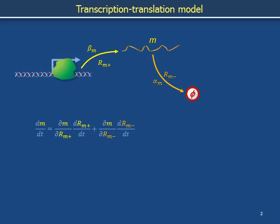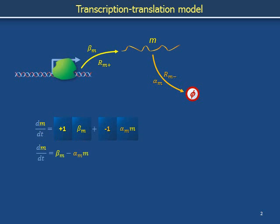The partial change in messenger RNA level owing directly to a transcription event is a gain of one. If the RNA polymerase, gene, and other reactants contributing to the chemical reaction we call transcription are present in constant amounts, the law of mass action prescribes a constant reaction rate, here called beta_m. The partial change in messenger RNA level owing directly to a messenger RNA degradation event is a loss of one. At this level of detail, the basic reactant for messenger RNA degradation is a copy of messenger RNA itself, so the law of mass action prescribes a time rate equal to a coefficient alpha_m multiplied against the level of messenger RNA. Thus, dm/dt = beta_m − alpha_m × m.